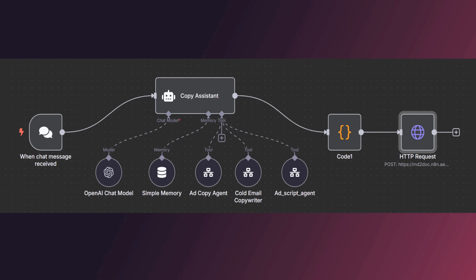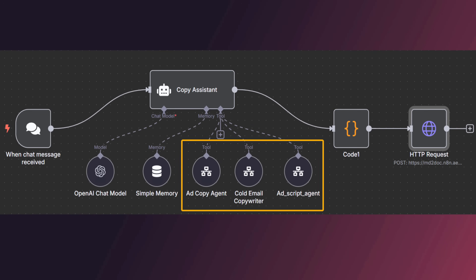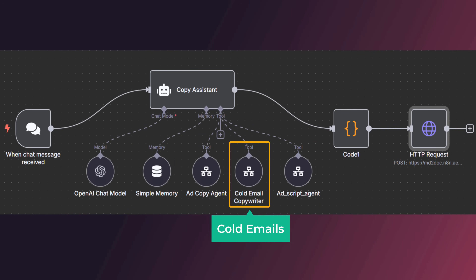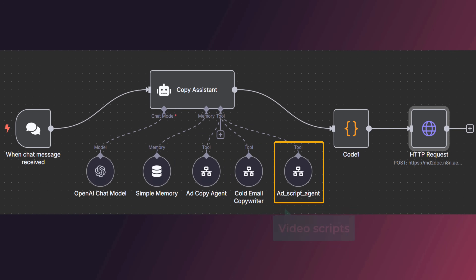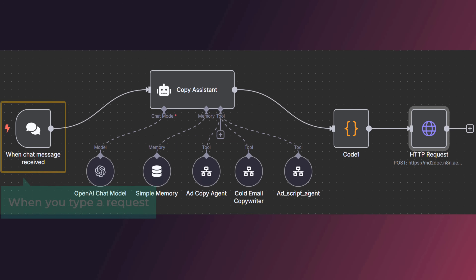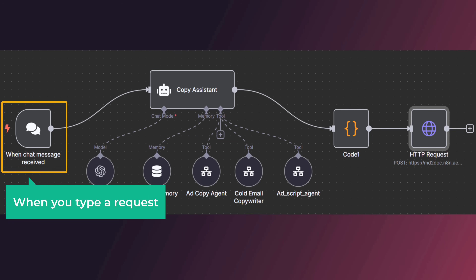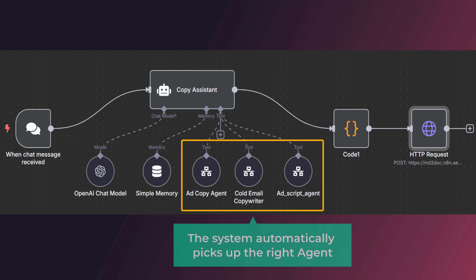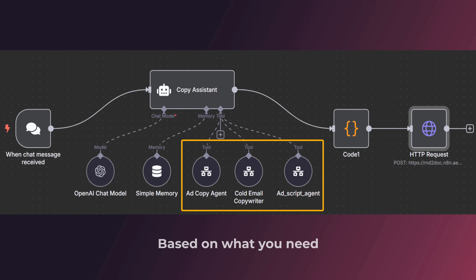This automation has three specific copywriter agents — one for ads, one for cold emails, and another one for video scripts, each one built with its own knowledge base. When you type a request, the system automatically picks the right agent based on what you need, using how each one was trained.